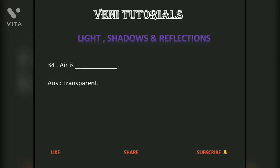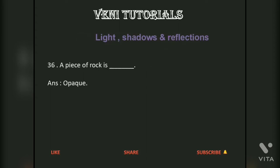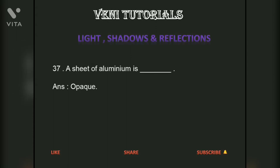Air is dash — answer: transparent. Water is dash — answer: transparent. A piece of rock is dash — answer: opaque. A sheet of aluminum is dash — answer: opaque.